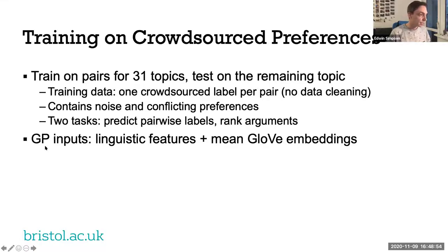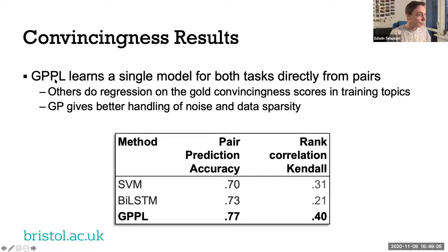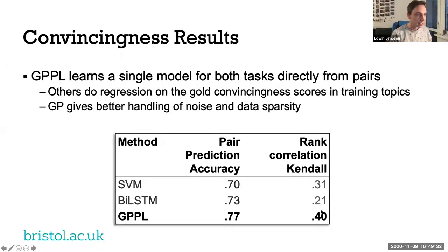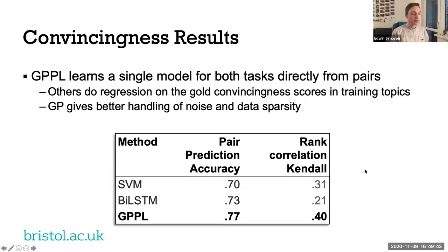Using linguistic features and mean word embeddings as feature representation, we compared against an SVM and a BiLSTM approach and got quite big improvements, particularly in the ranking task. The GPPL approach was learning a single model directly from pairwise labels. The other two methods used gold scores for convincingness to train a regression model for ranking, which doesn't work as well because the scores are not well calibrated between different topics. Having a model that can do preference learning from pairwise comparisons is really effective.